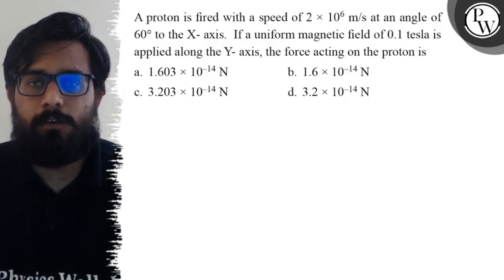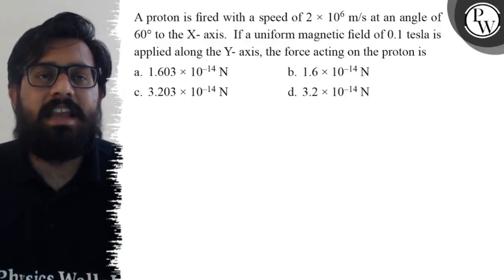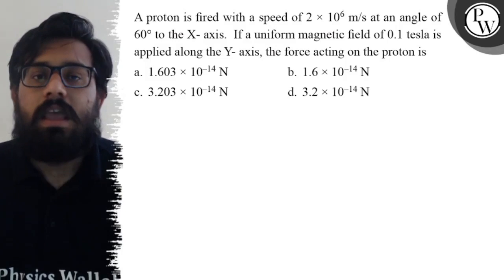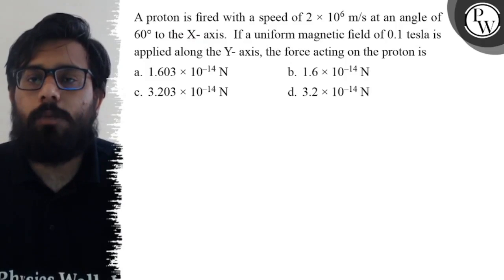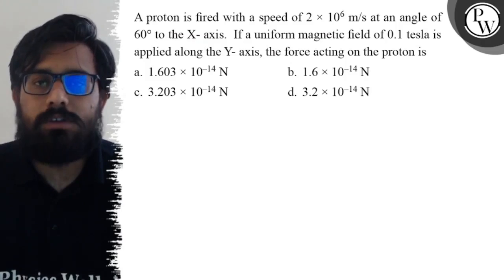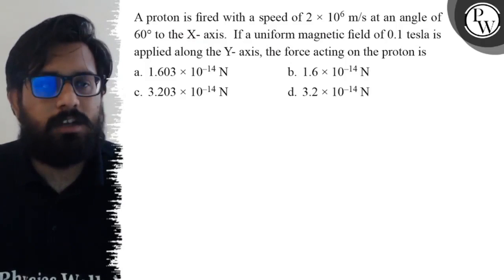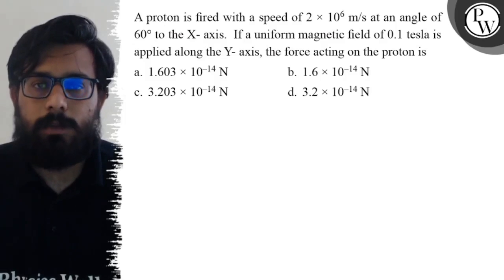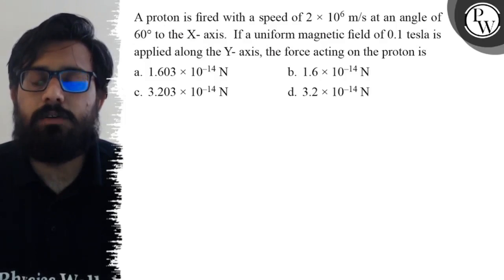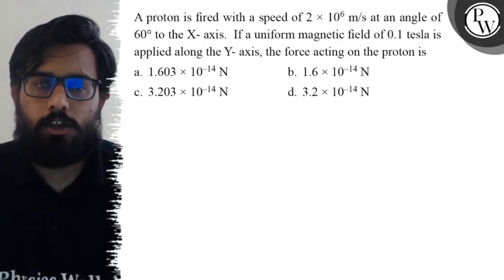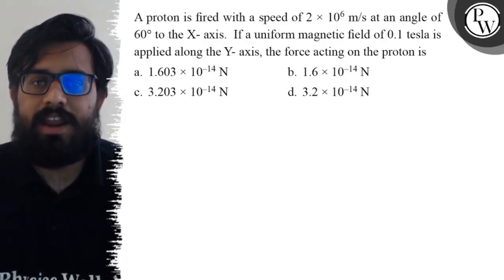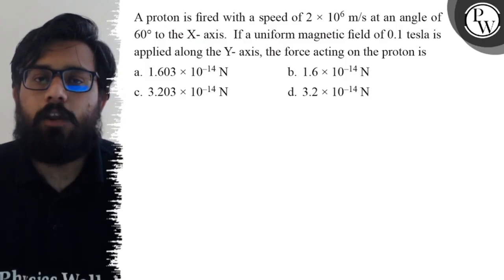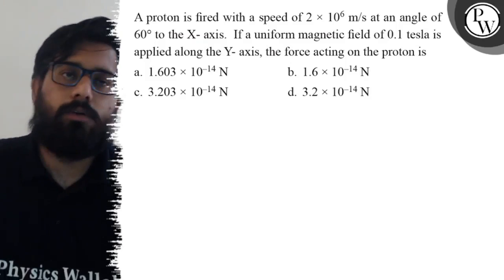A proton is fired with a speed of 2 into 10 to the power 6 meter per second at an angle of 60 degree to the x-axis. If a uniform magnetic field of 0.1 tesla is applied along the y-axis, the force acting on the proton is: your first option is 1.603 into 10 to the power minus 14 newton, your second option is 1.6 into 10 to the power minus 14 newton, your third option is 3.203 into 10 to the power minus 14 newton, and your fourth option is 3.2 into 10 to the power minus 14 newton.